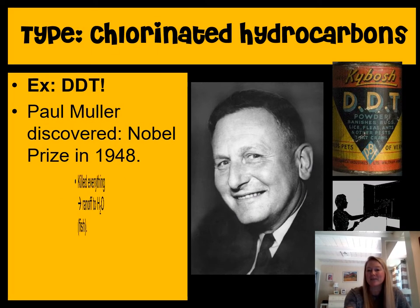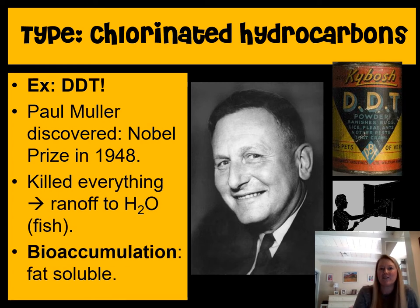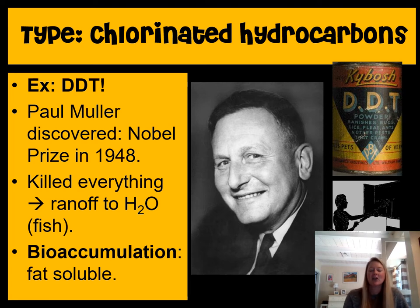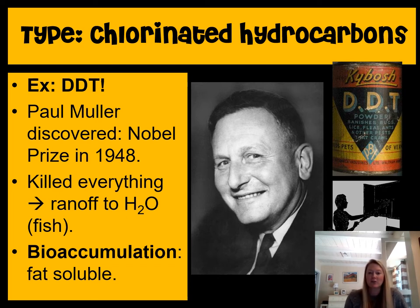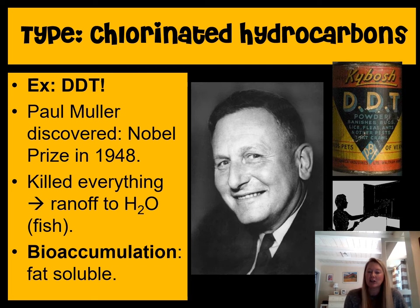One very famous type of pesticide is the chlorinated hydrocarbon. If you break down the name, you can figure out that the elements chlorine, hydrogen, and carbon are in this chemical. A good example of one that is now banned in the United States is DDT, a very famous chlorinated hydrocarbon. It was invented by Paul Mueller, who actually received the Nobel Prize for his invention in 1948 because it was at the time a wonderful broad-spectrum insecticide that killed many species on crops. Farmers were absolutely in love with it. However, a couple of years later, we noticed that DDT did not stay in place — it ran off the farms and went into the nearest waterways, accumulating there.